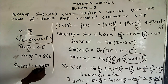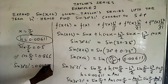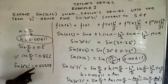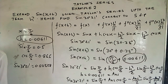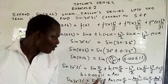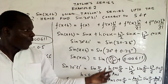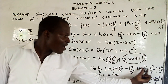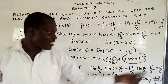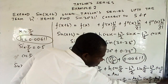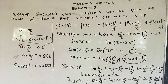The result to 5 decimal places is 0.50528. So sine 30 degrees 21 minutes equals 0.50528, where x equals pi over 6 and h equals 0.00611. That is how to solve this given problem.